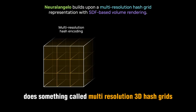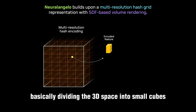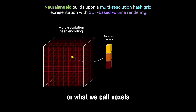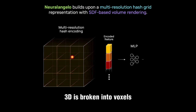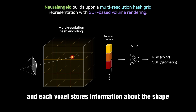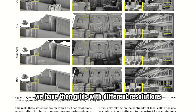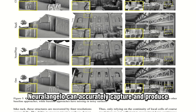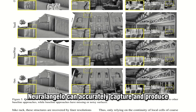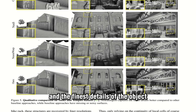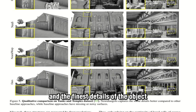It first does something called multi-resolution 3D hash grids — basically dividing the 3D space into small cubes, or what we call voxels. Similar to a pixel in a 2D image, 3D space is broken into voxels, and each voxel stores information about the shape, color, and other characteristics of the 3D object. With grids at different resolutions, NeuralAngelo can accurately capture and produce both the big picture and the finest details of the object.